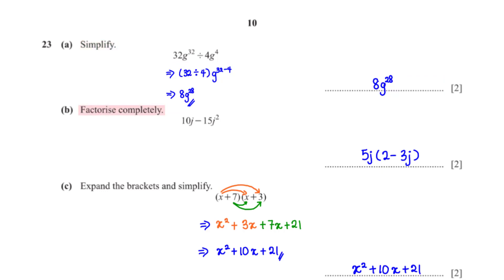Factorize completely: 10j minus 15j squared. The terms have a common factor of 5j. When we factor that out, we are left with 5j times (2 minus 3j).